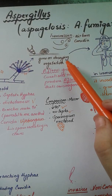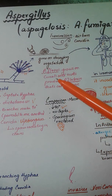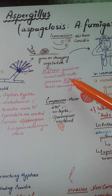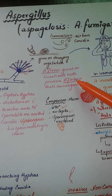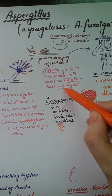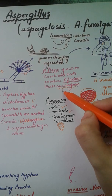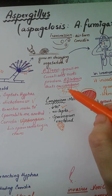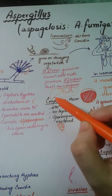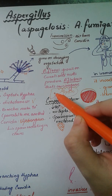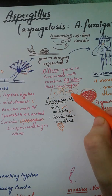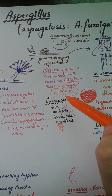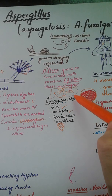Aspergillus fumigatus grows on decaying vegetation. Another species, Aspergillus flavus, grows on nuts and cereals, and while growing it produces a toxin known as aflatoxin. If ingested by humans, aflatoxin has carcinogenic properties because it suppresses TP53, which is a proto-oncogene that helps prevent cancer. This aflatoxin is known to cause hepatoma formation in the liver, which can progress to carcinoma.